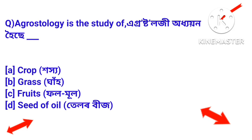Agrostology is the study of — agrostology oi dhan hoise. The answer is grass. Ghaan har bhi hoi — the study of grass is called agrostology.